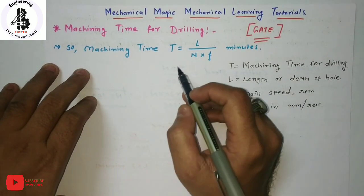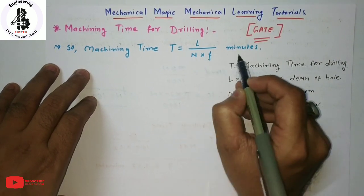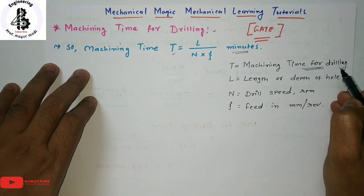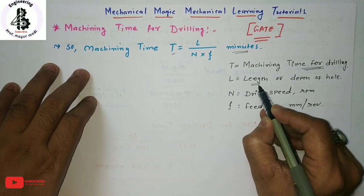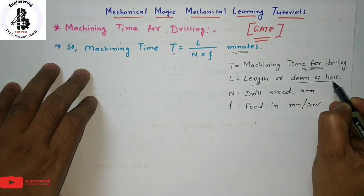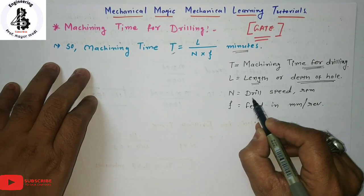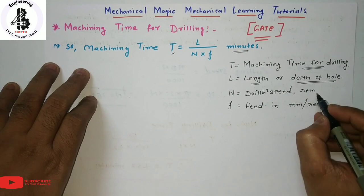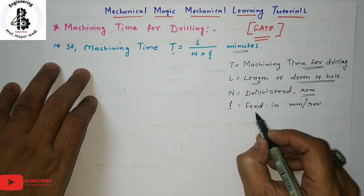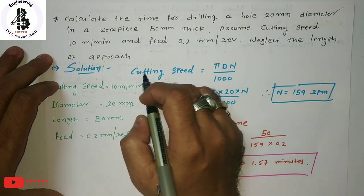Let us see the equations for calculating machining time. Time T equals L divided by N into F, in minutes. Here T indicates machining time for drilling operations; L is the length of the drill, or thickness of the workpiece, or depth of the hole; capital N is the drill bit speed in revolutions per minute (RPM); and small f is the feed in mm per revolution.